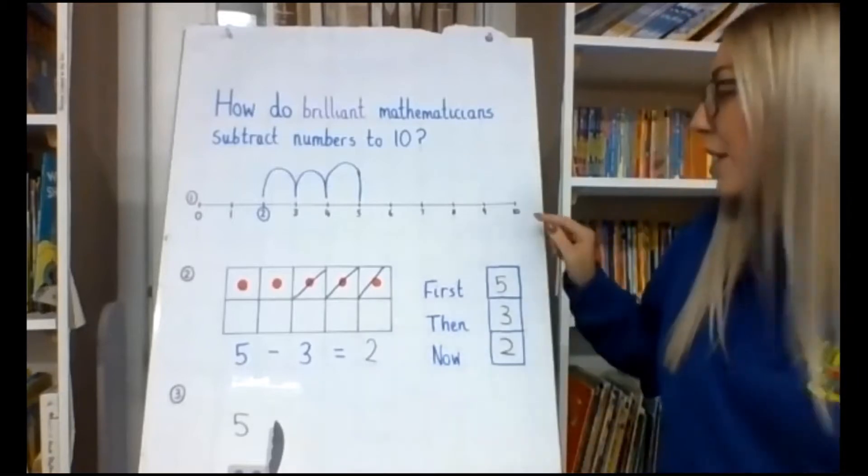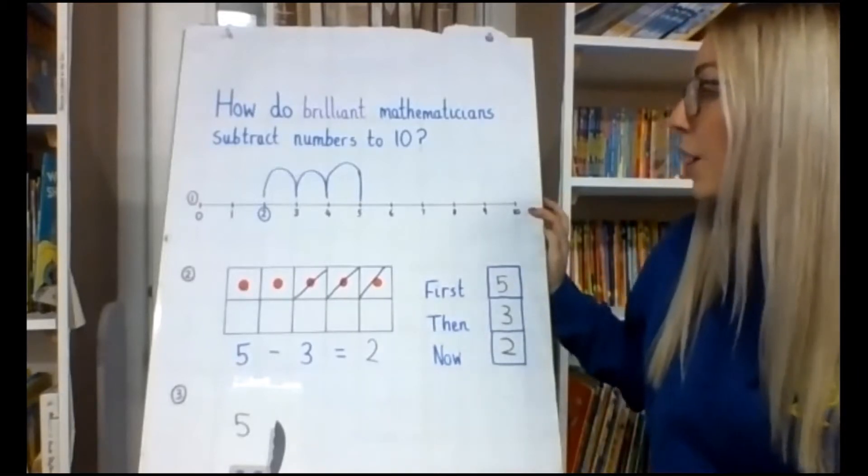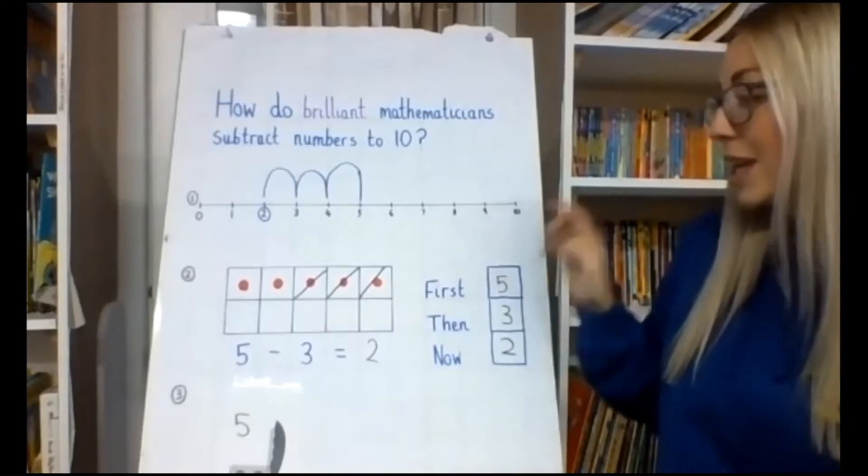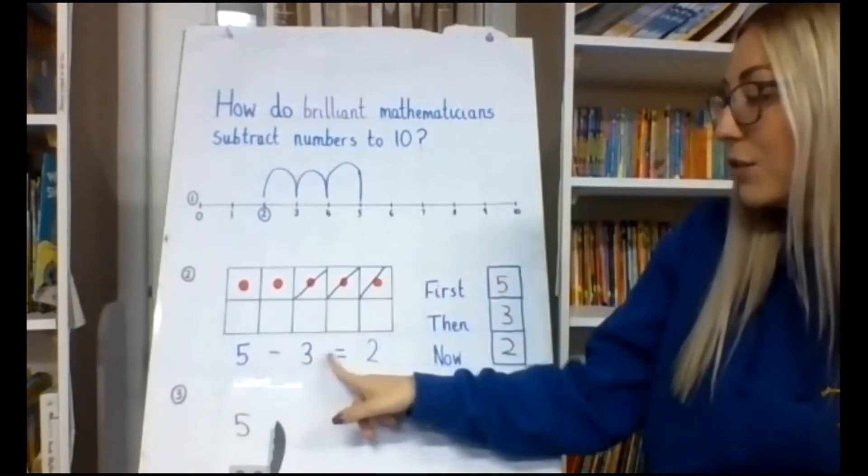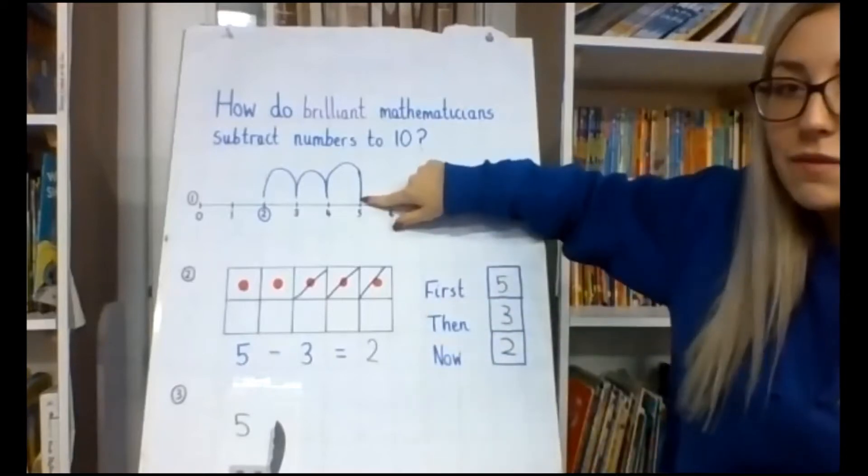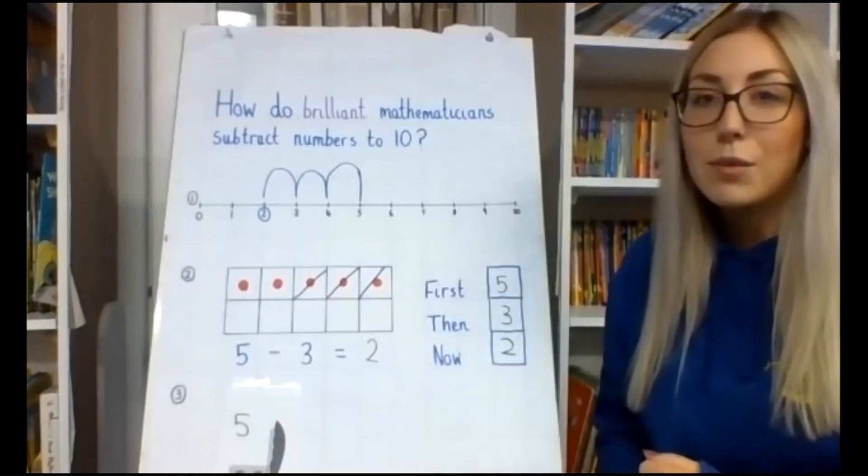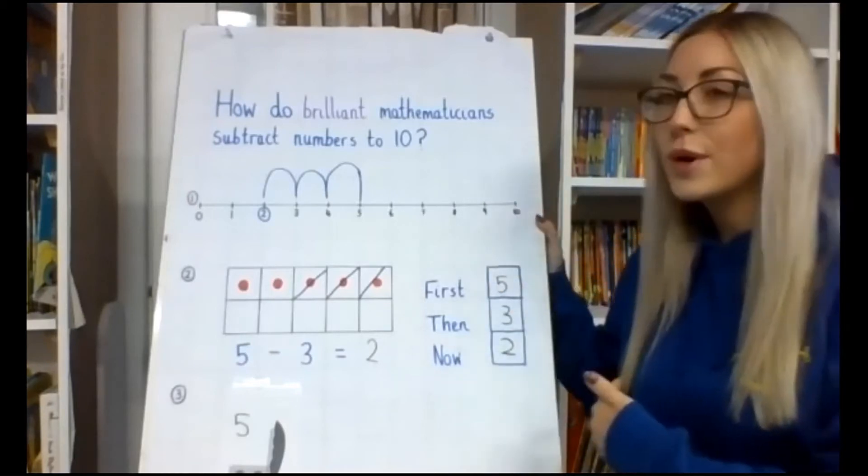So the first method, we have a number line up to 10. We are going to start with our first equation which is 5 take away 3 equals. So what we do is we dot 5, this time because we are taking away or we are subtracting, we need to count backwards instead of going forwards.